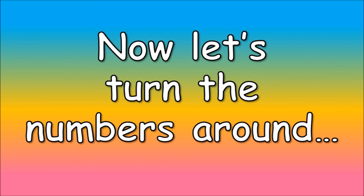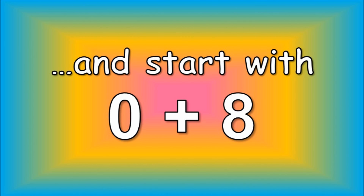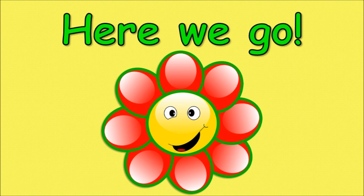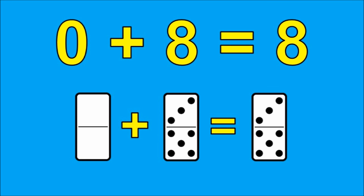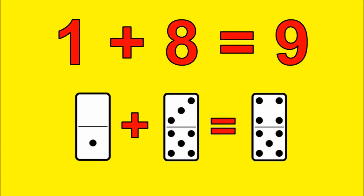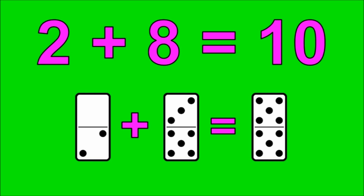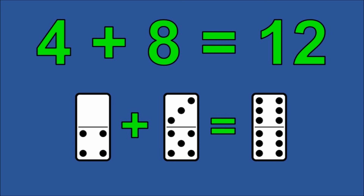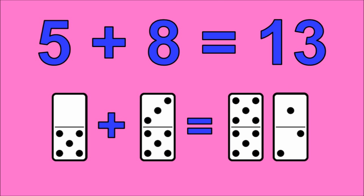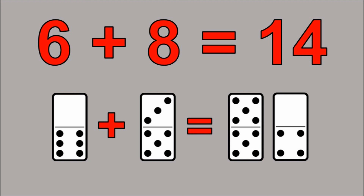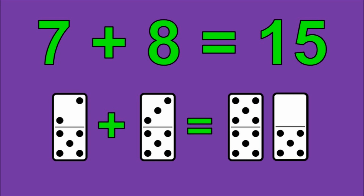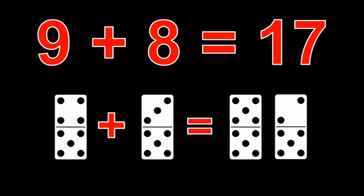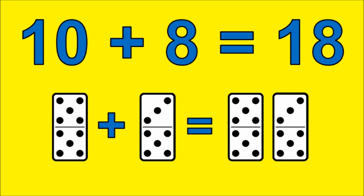Excellent job, kids. Now let's turn the numbers around and start with zero plus eight, and go all the way up to ten plus eight. Here we go. Zero plus eight is eight. One plus eight is nine. Two plus eight is ten. Three plus eight is eleven. Four plus eight is twelve. Five plus eight is thirteen. Six plus eight is fourteen. Seven plus eight is fifteen. Eight plus eight is sixteen. Nine plus eight is seventeen. Ten plus eight is eighteen.